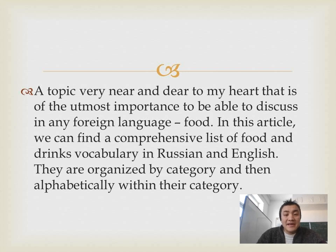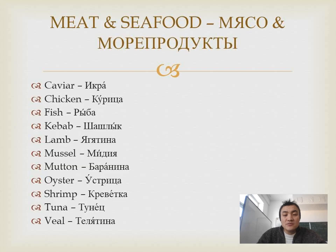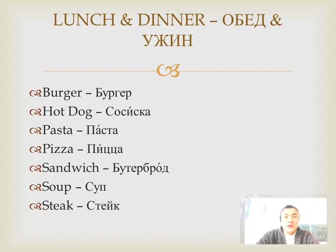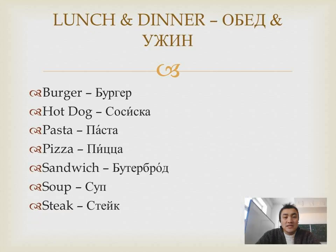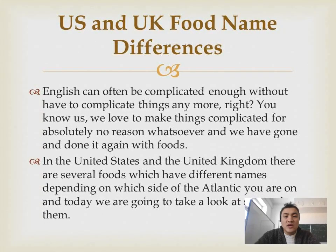In this article we can find a comprehensive list of food and drinks vocabulary in Russian and English, organized by category and then alphabetically within each category. Also, as we can see, the names of lunch and dinner are too modern — because only in the last century did people create the names of these foods.